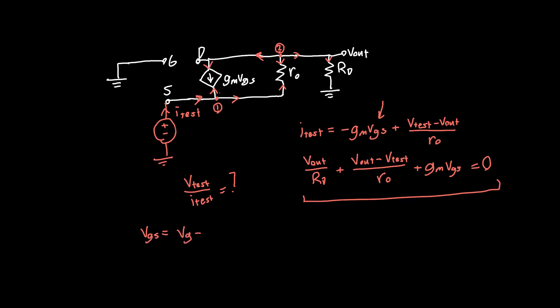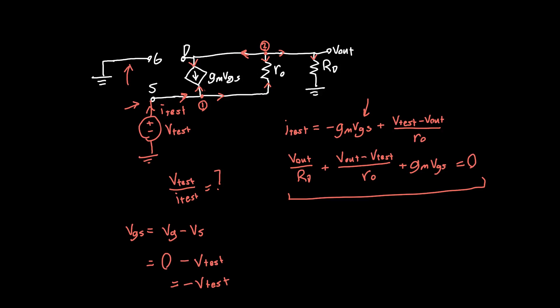VGS is not part of the answer that we want. VGS is, as usual, VG minus VS. And here, VG is zero volts, because the gate is grounded. And VS is just equal to V test. So, zero minus V test, or negative V test.